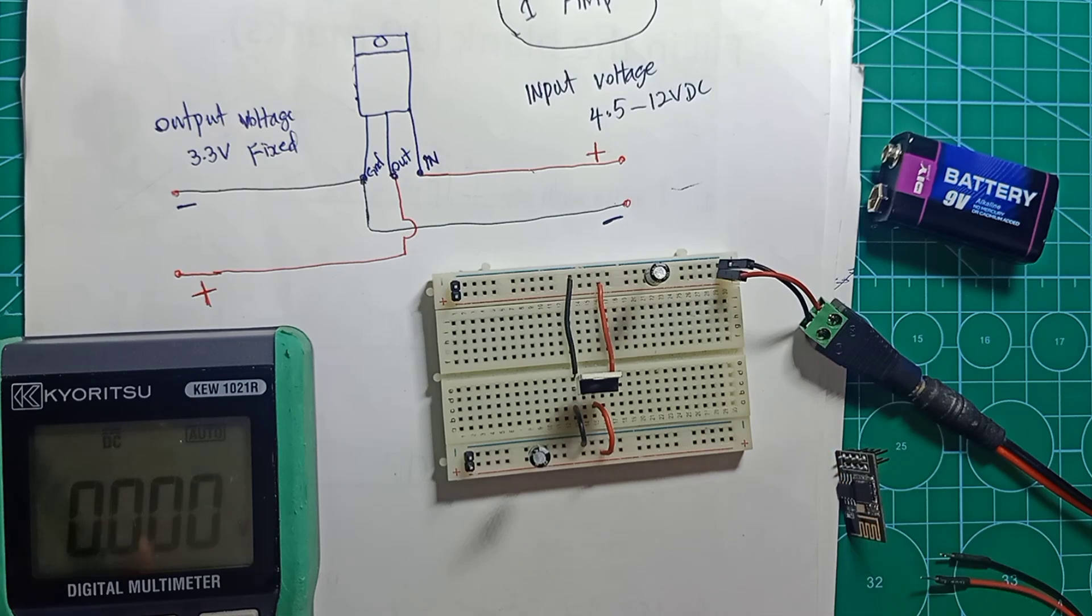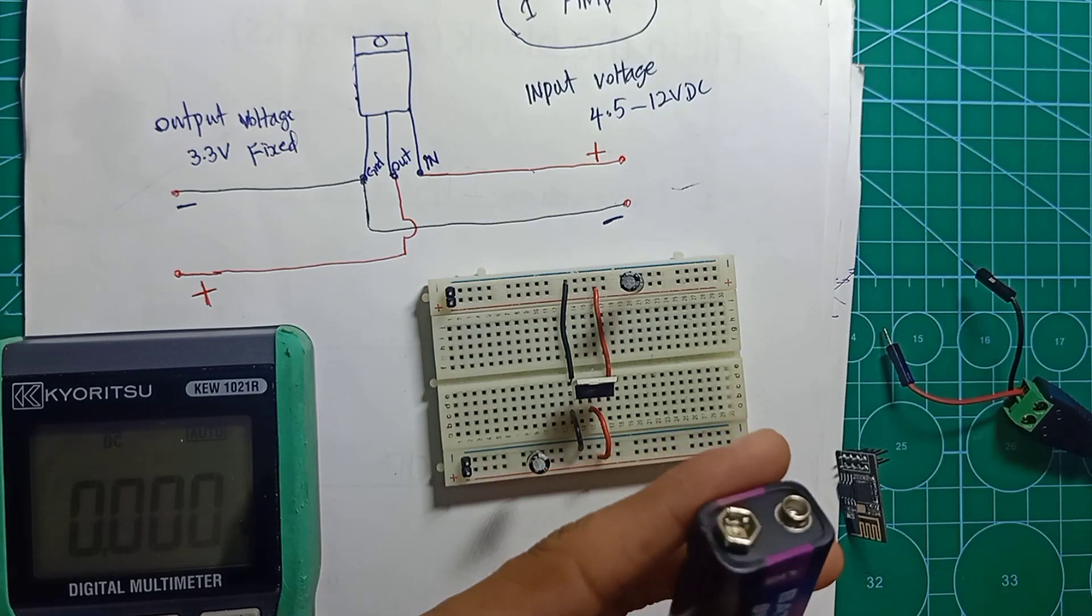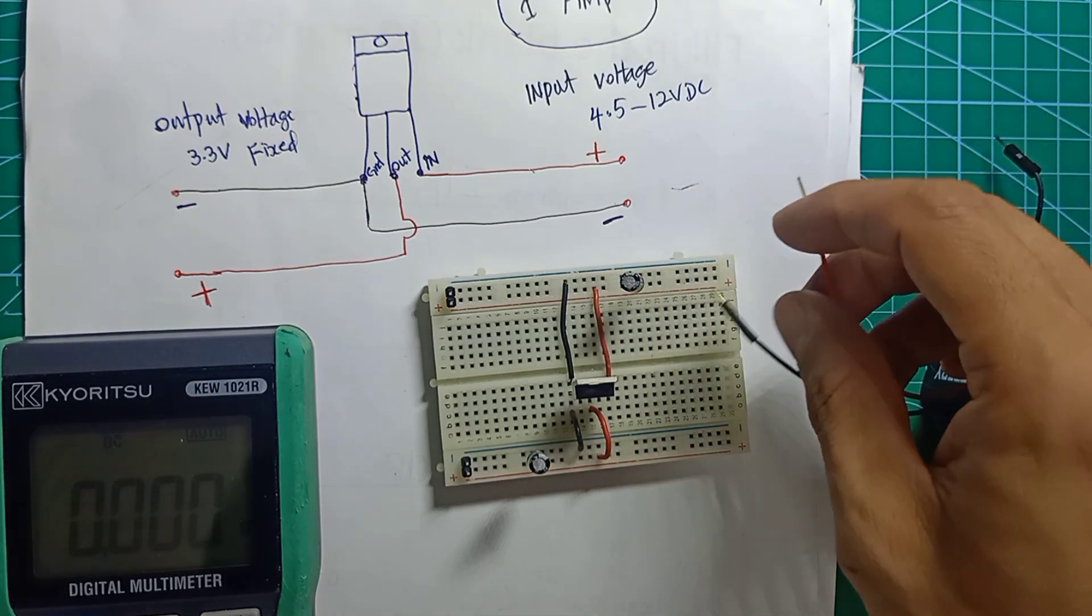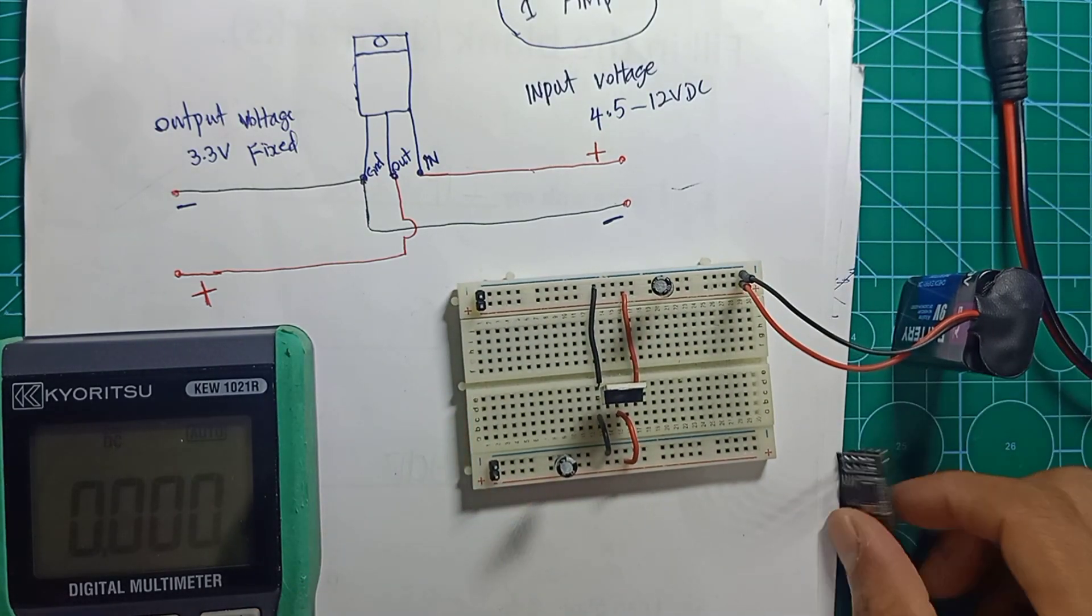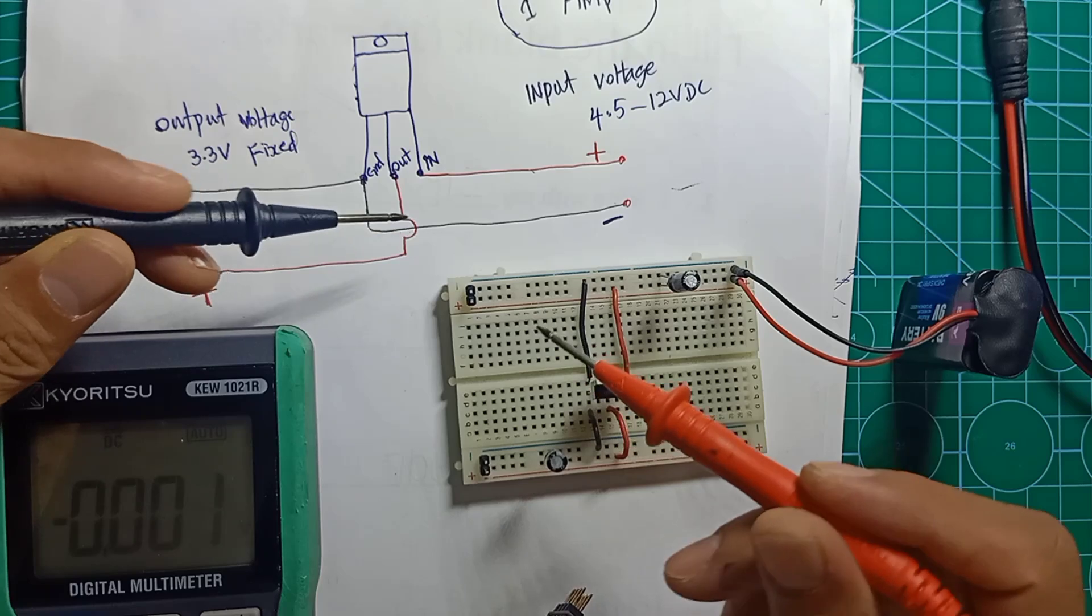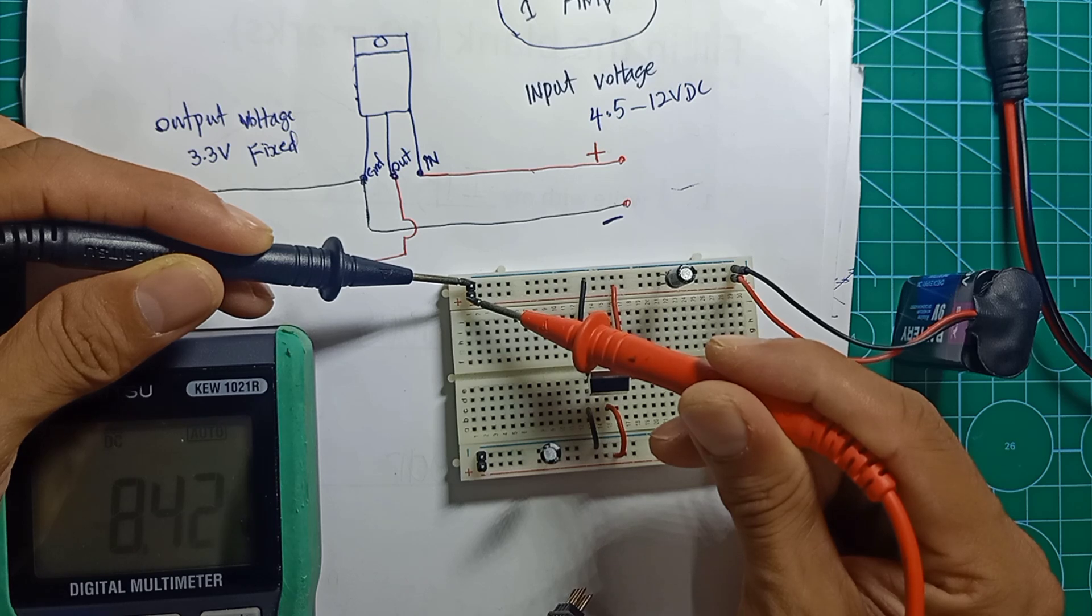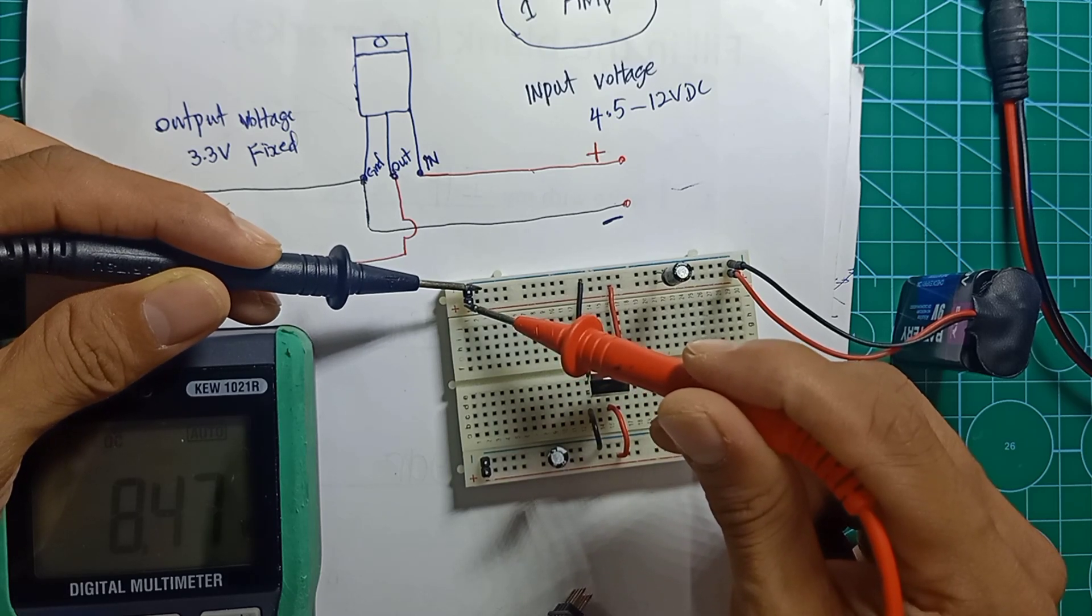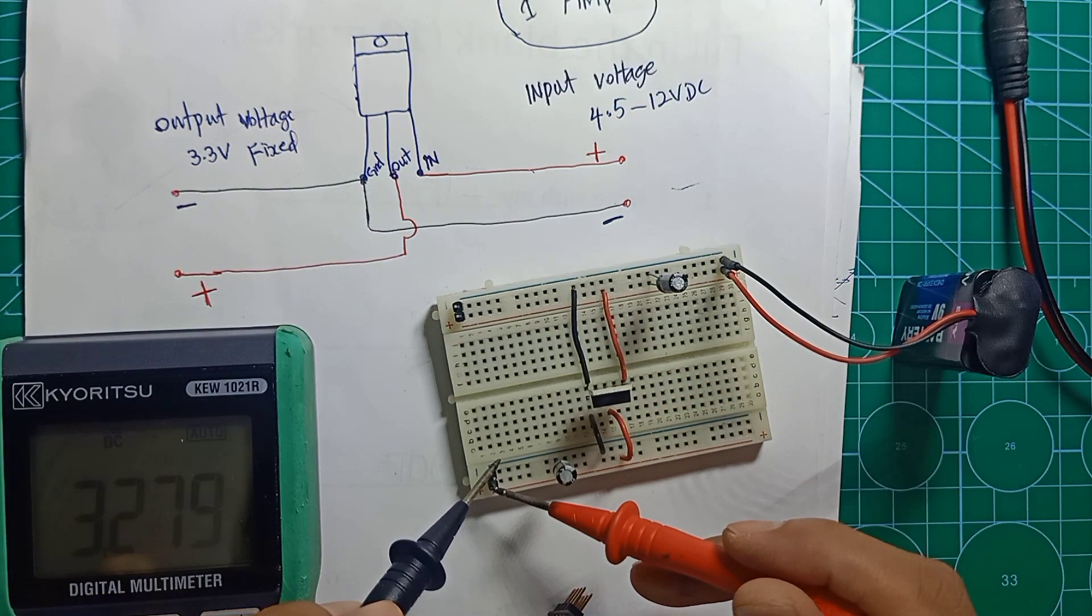Not only 12 volts, you can use 9 volt power supply as well if you don't have 12 volt. This is positive here and this is negative. I can get 3.3 volts also. The input is now 8.43 volts because my battery is a little bit low - it's supposed to be 9 volts. The output will be 3.3 volts.